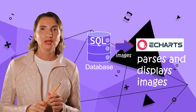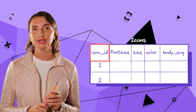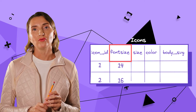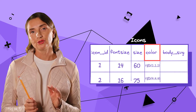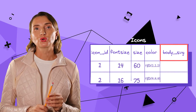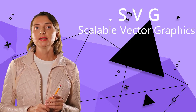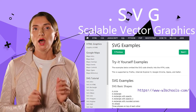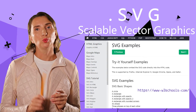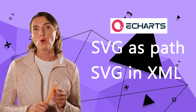Let's dive into how I did it for my project. First of all, I created a table named Icons consisting of the following columns: Icon ID for primary key, font size to capture the font size of the caption letters, size to capture the icon size, color, and body SVG to store the text of my SVG files. SVG stands for Scalable Vector Graphics and defines graphics in XML format. More information can be found at this web resource. Apache E-charts works equally well with SVG specified directly as a path and in XML format.